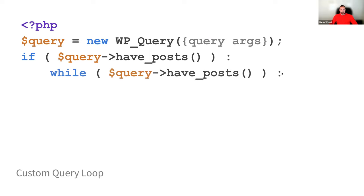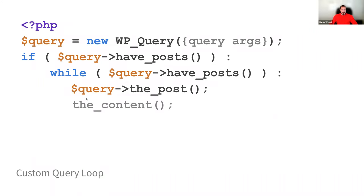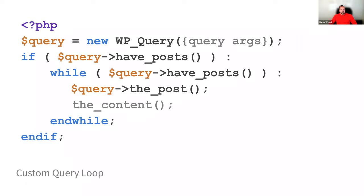While the query has posts, we do $query->the_post. Nothing different — we're just doing $query-> in front of the functions, similar to what we saw before. We would still use our template tags the same way, because the_post does a particular setup and any template tags used after that are specific to that particular post. Then we end our loop. If we want an else statement for no posts found, we can do that as well.